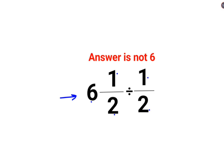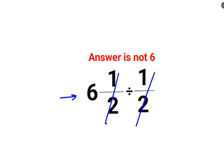Now in something like this, what should we do? Please understand that when you have something like this, it looks so easy, right? It seems like the 1/2 and 1/2 get cancelled and the answer should be 6. No, that's not how division works.